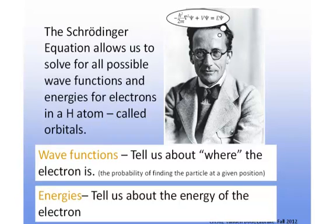The Schrödinger equation allows us to solve for all possible wave functions and energies for an electron in a hydrogen atom. These solutions are called orbitals.